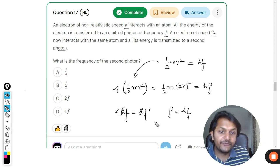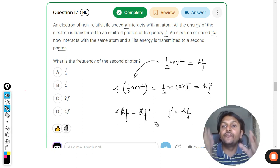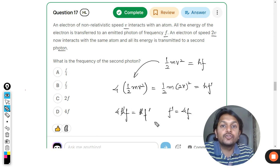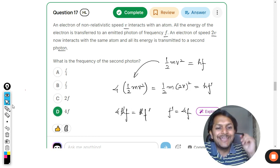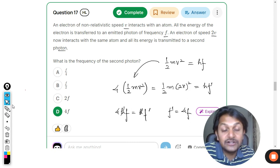So now the frequency will become four times if the velocity of the electron is doubled. Let us see if we have got the correct answer, and yes indeed, this is the correct answer. This is what is the explanation for this question.